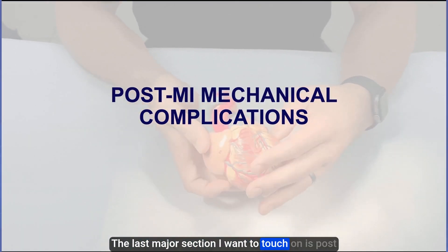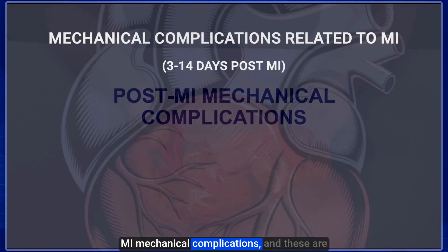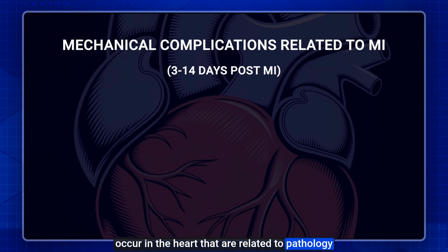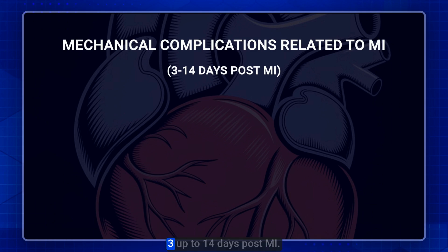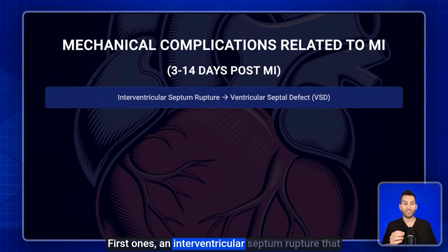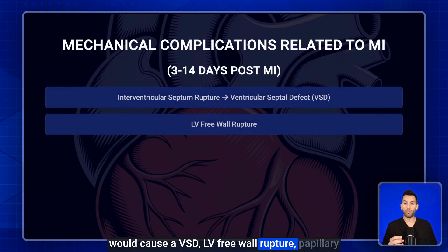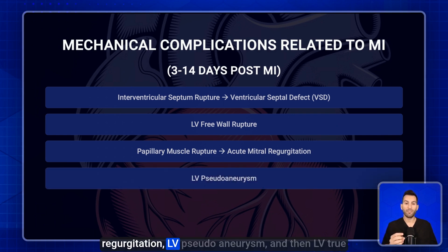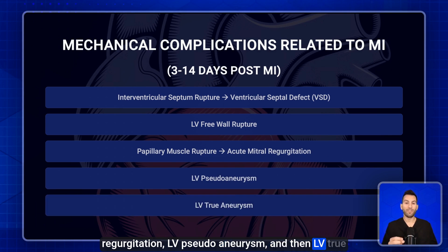The last major section is post-MI mechanical complications — structural complications of the heart related to pathological changes that occur after a myocardial infarction. These are frequently seen up to 14 days post-MI and include: interventricular septum rupture causing a VSD, LV free wall rupture, papillary muscle rupture causing acute mitral regurgitation, LV pseudoaneurysm, and LV true aneurysm.